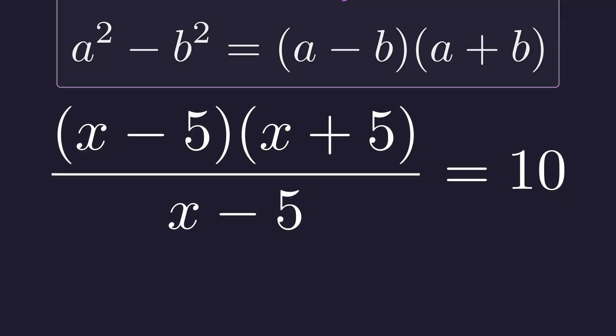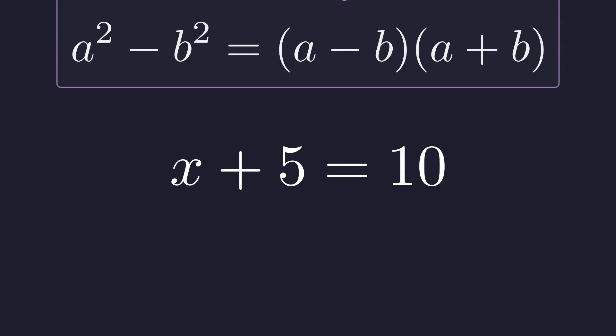Now look at what happened. x minus 5 appears both in the numerator and the denominator. As long as x isn't 5, which we already established it can't be, we can cancel these terms. After canceling, we get this beautifully simple linear equation: x plus 5 equals 10.